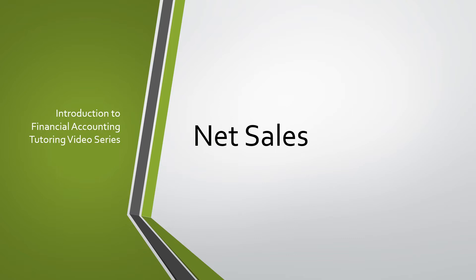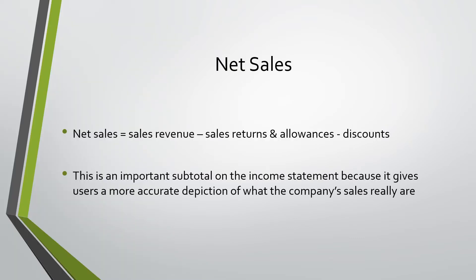Today, we will be going over net sales. Net sales equals sales revenue minus sales returns and allowances minus discounts. This is an important subtotal in the income statement because it gives users a more accurate depiction of what the company's sales really are.